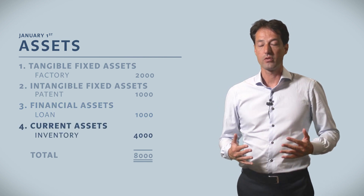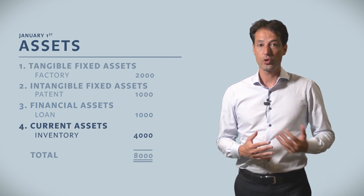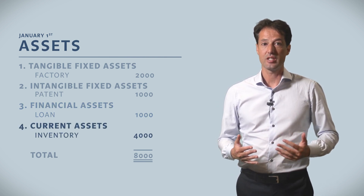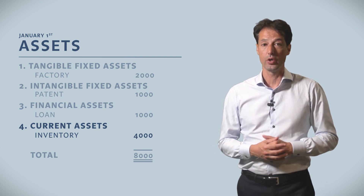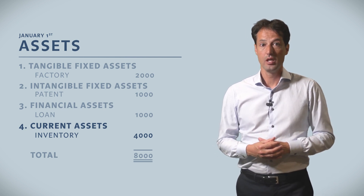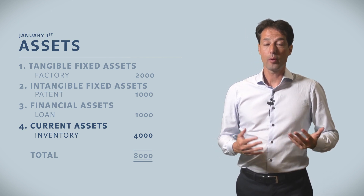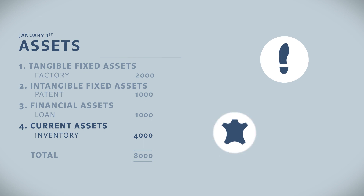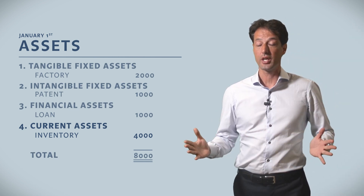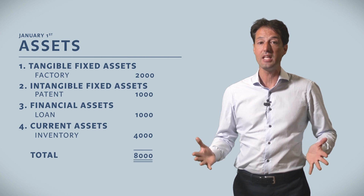The last category is what we call current assets — assets that are cash or will turn into cash within a period of one year. If you look at our balance sheet, the sum of 4000 is represented by inventory of leather and rubber materials needed to manufacture our shoes. The size of total assets is then 8000.